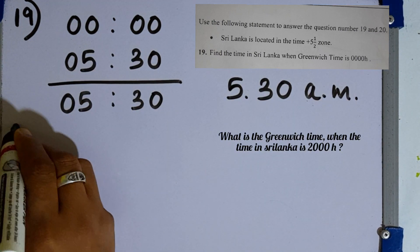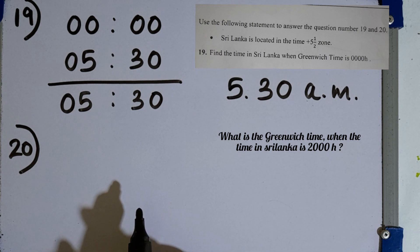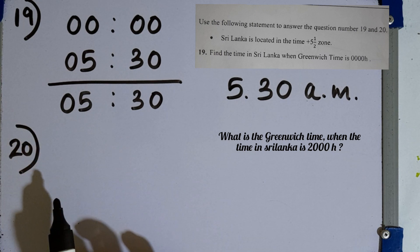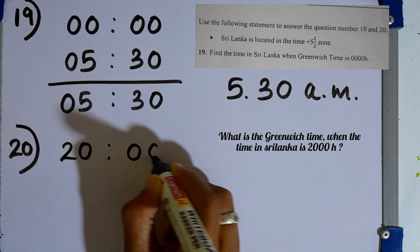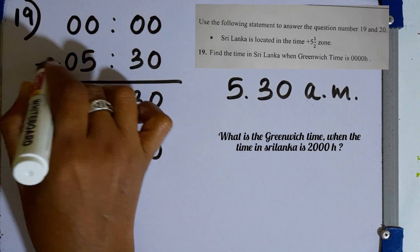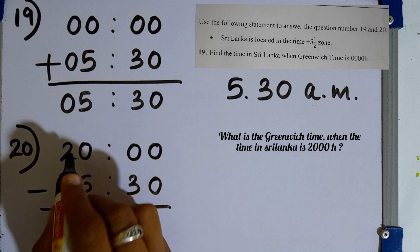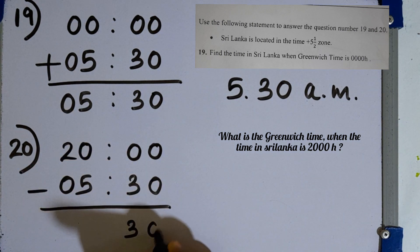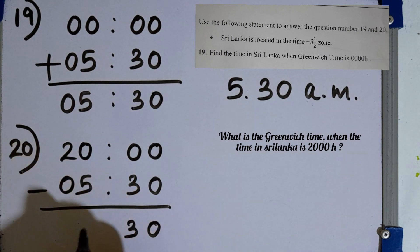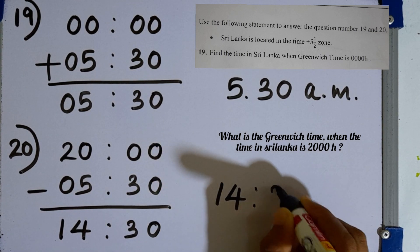Question number 20. What is the Greenwich time when the time in Sri Lanka is 20 hours? We subtract 5 and a half hours from 20 hours. Taking 1 hour to convert to 60 minutes, then subtracting 30 minutes: 19 hours minus 5 hours gives 14 hours 30 minutes. The Greenwich time is 14 hours 30 minutes.